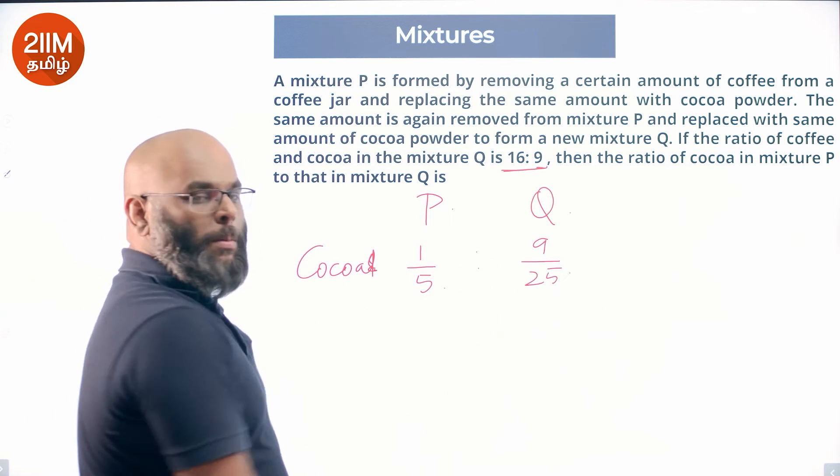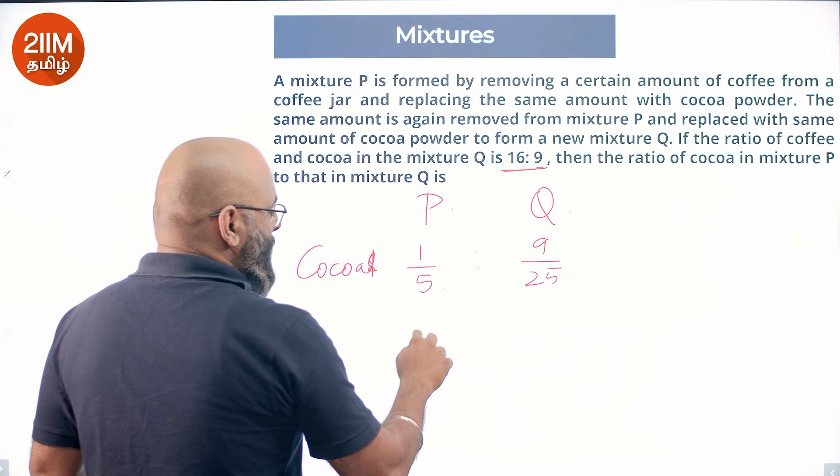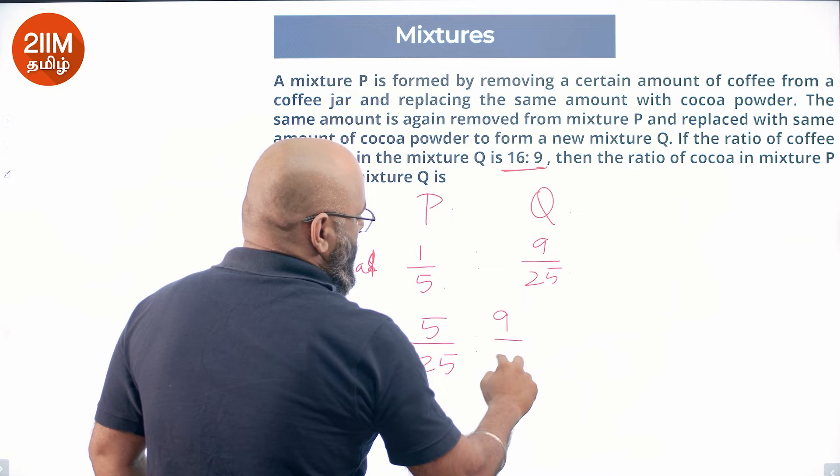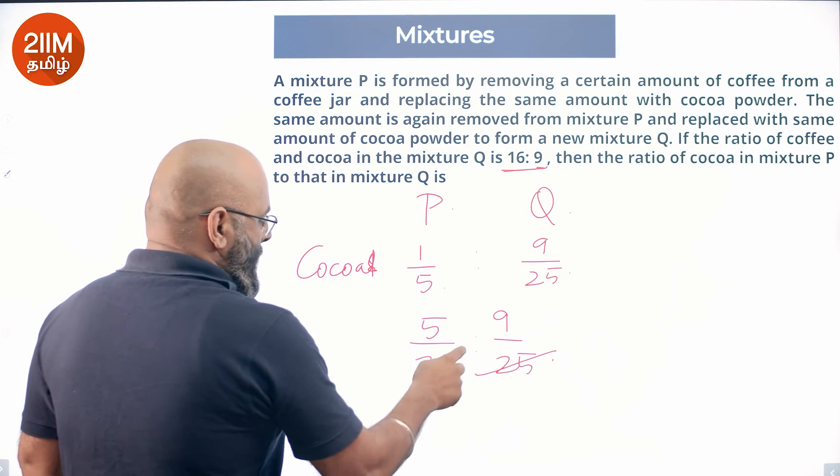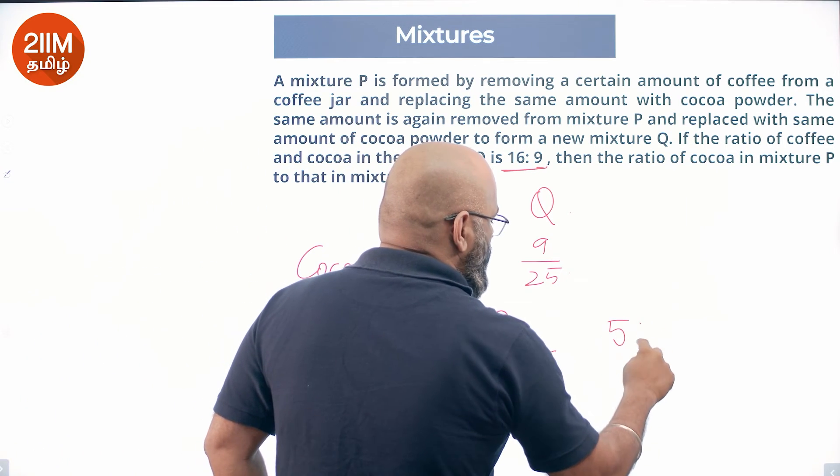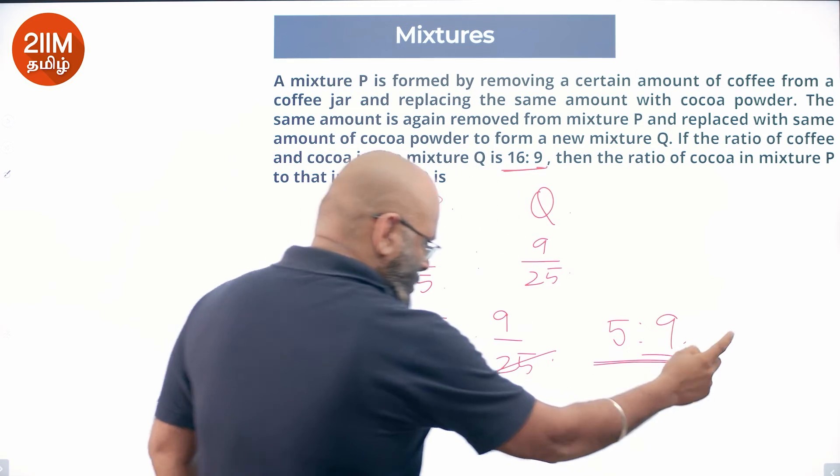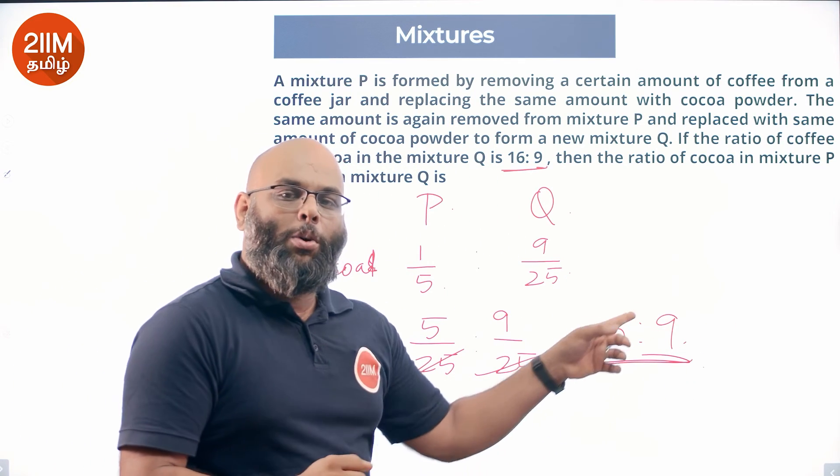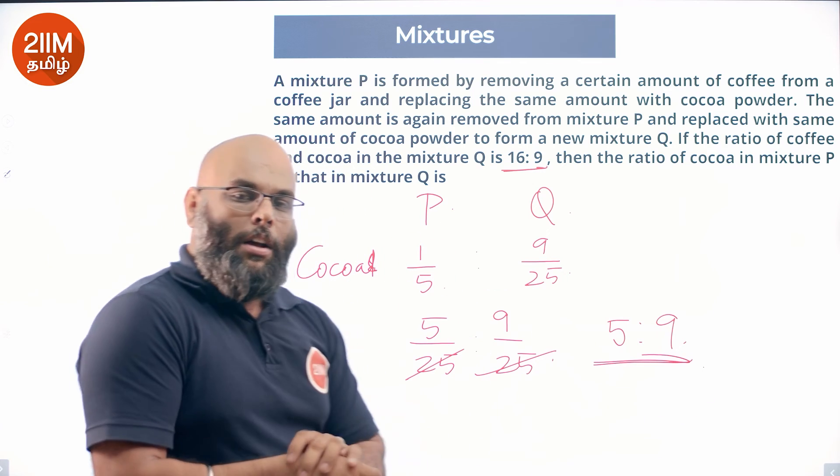So this ratio is 5 by 25 to 9 by 25. LCM and cancel out. 5 to 9. So mixture P has cocoa 5 parts, and mixture Q is 9 parts.